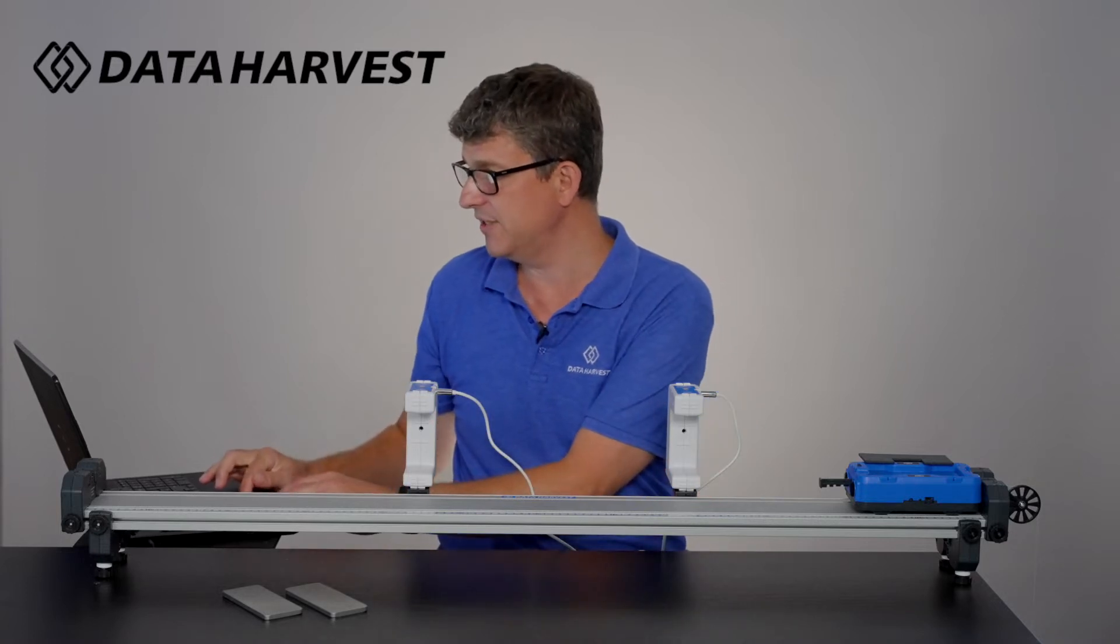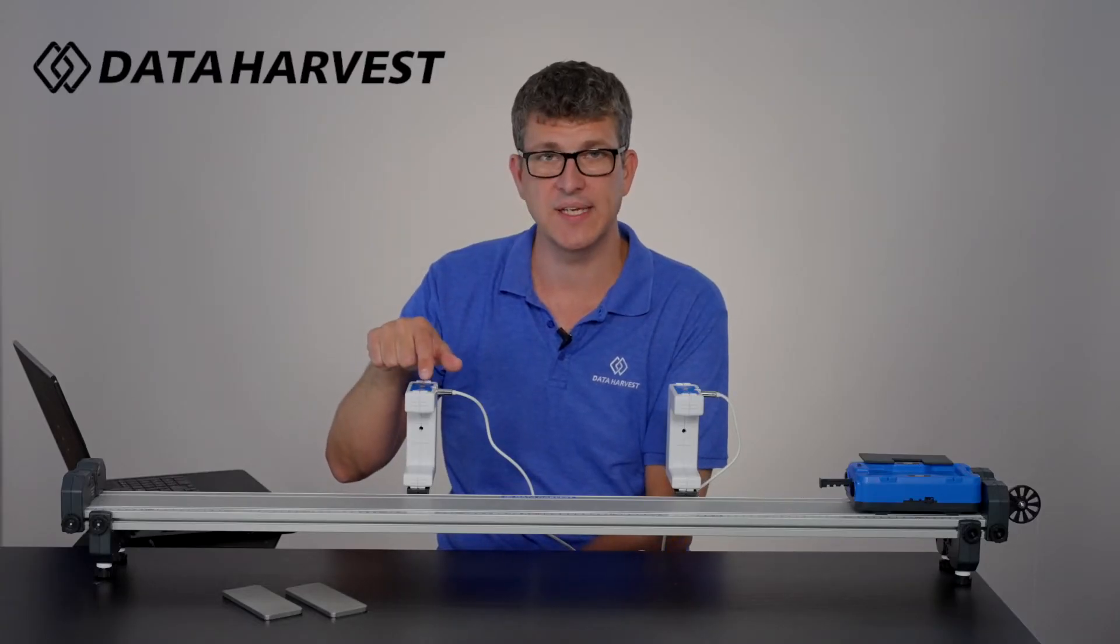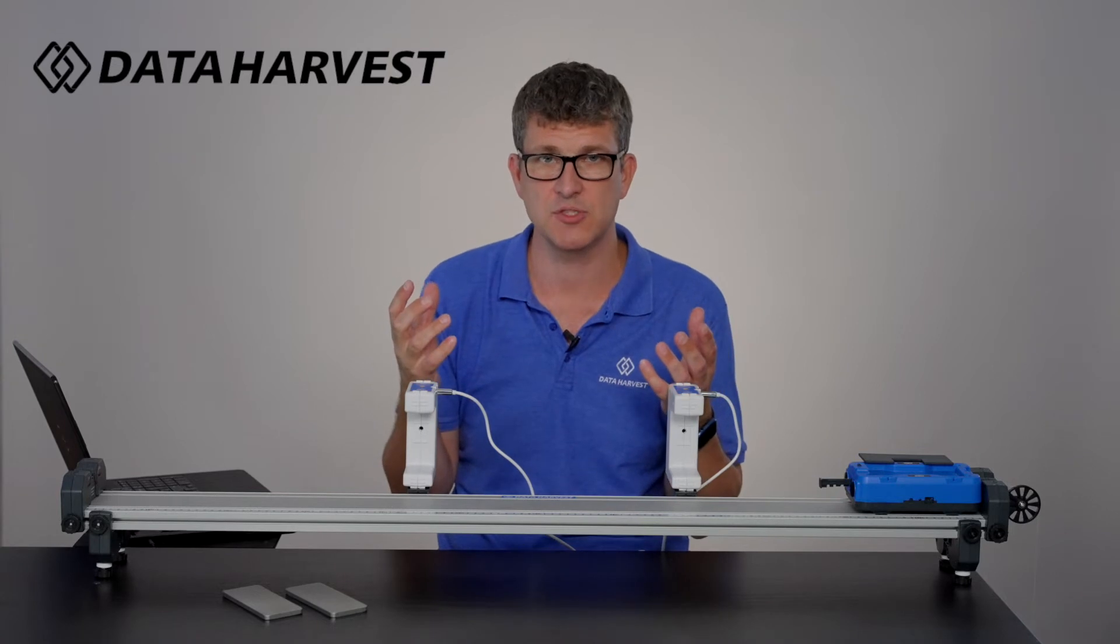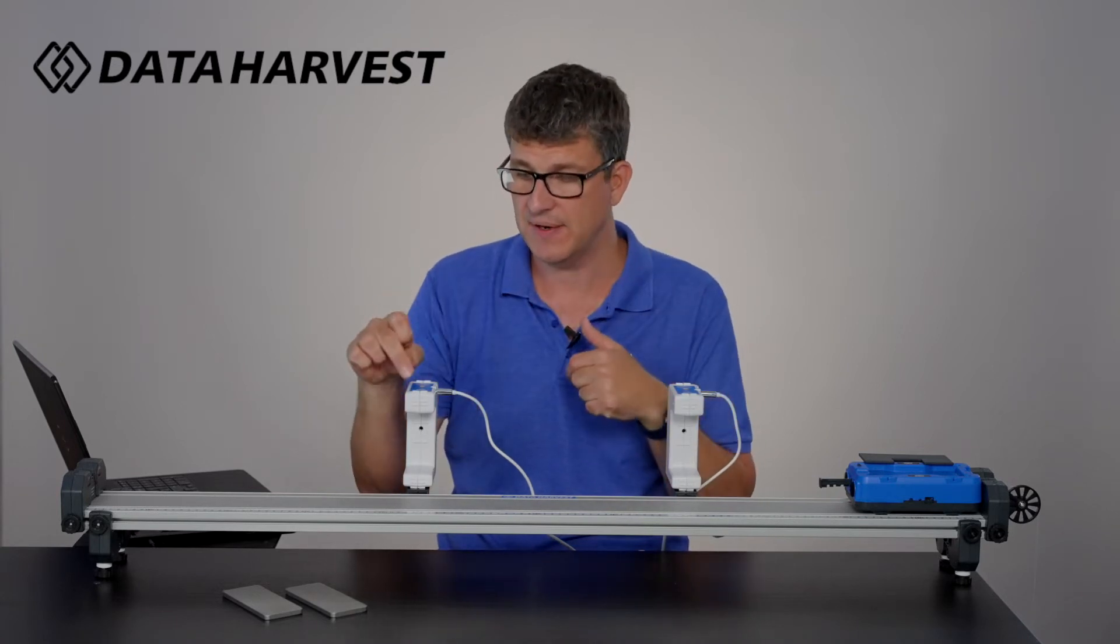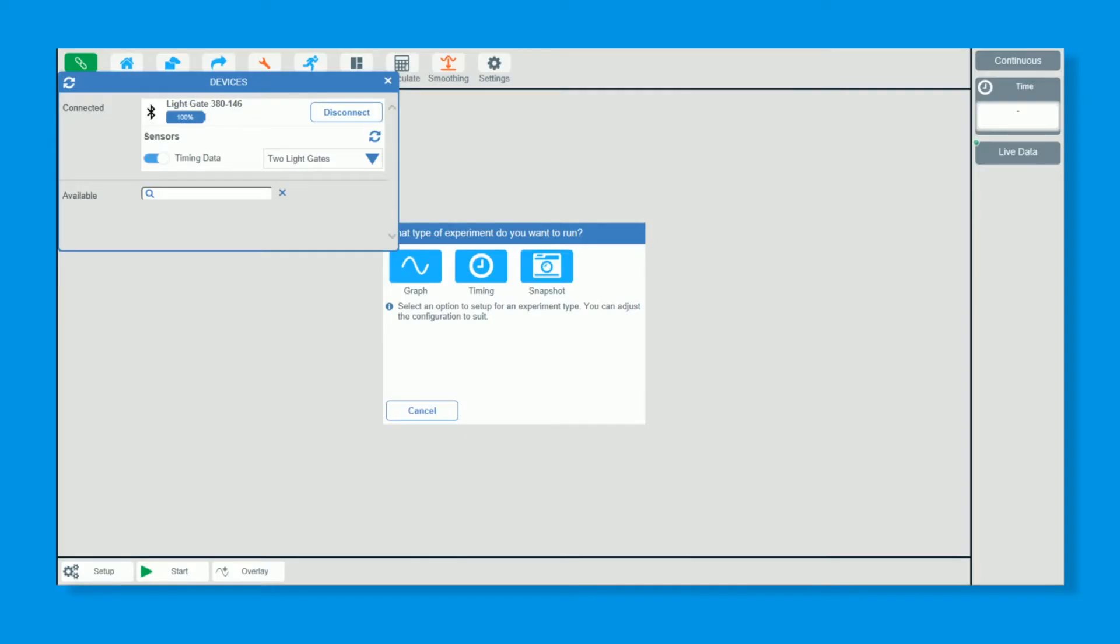I'm now going to go to the EasySense 2 software and click on connect. We've got number 146. They've all got their own unique number on the light gate. When you have multiples of these within the classroom they'll say light gate but then they all have their own six digit number afterwards. So each student will know which one they are using. Make sure you've got two light gates selected on here.